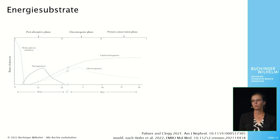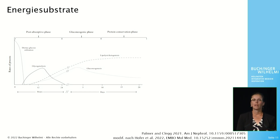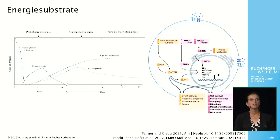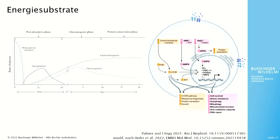Rapidly available proteins are transitionally used for gluconeogenesis. The metabolic switch takes about 12 to 36 hours and depends on glycogen stores and individual energy expenditure, for example through exercise.